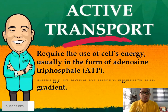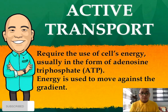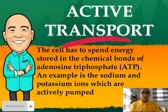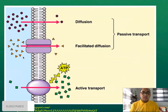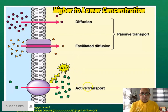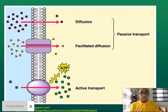Now let's move on to active transport. It requires the use of the cell's energy in the form of adenosine triphosphate (ATP). Energy is used to move molecules against the gradient — from lower to higher concentration. The cell spends energy stored in the chemical bonds of ATP. A very good example is the sodium and potassium pump, which actively pumps ions across the cell — from lower to higher concentration with the aid of ATP.